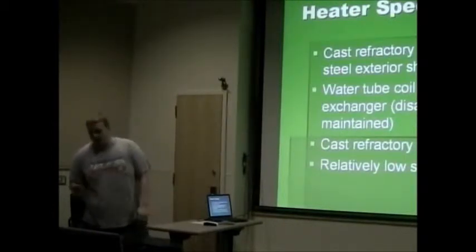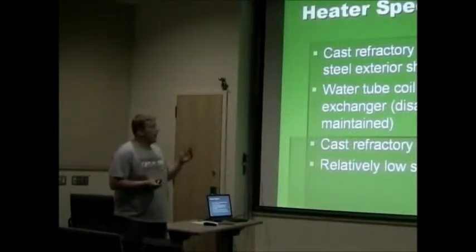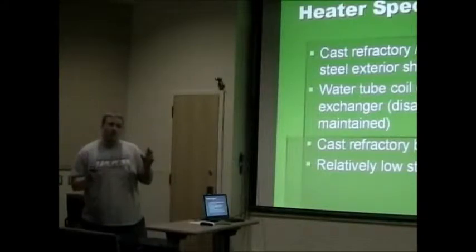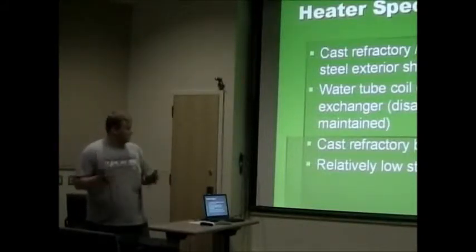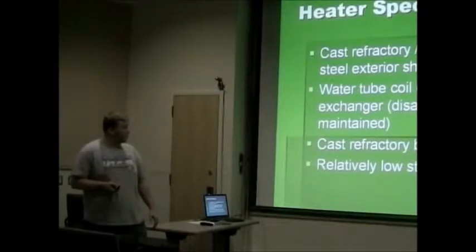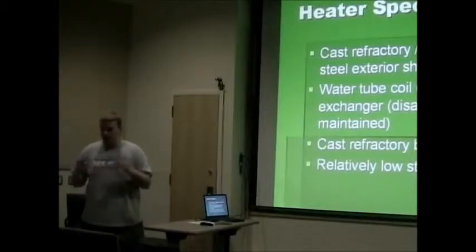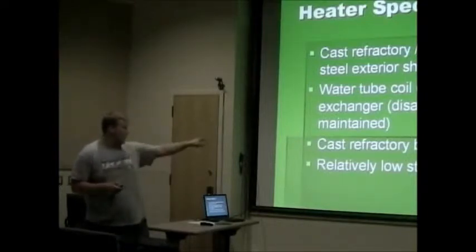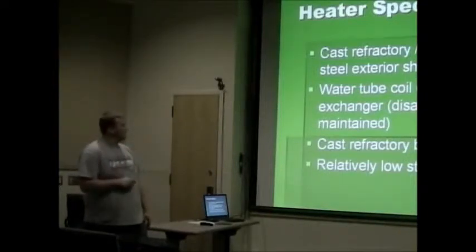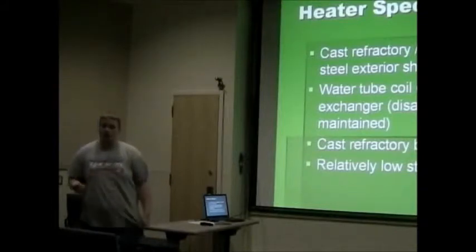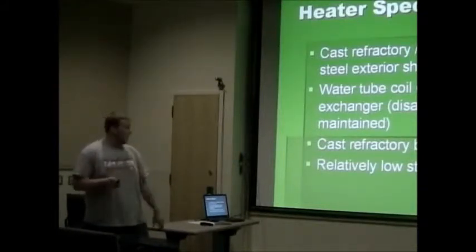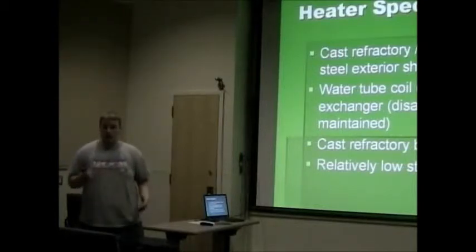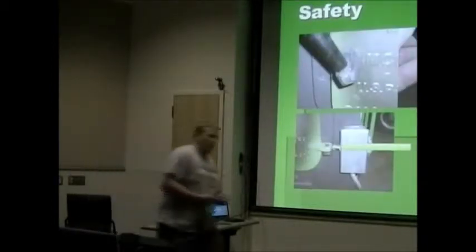Here are some heater specs that we have. We wanted to have some cast refractory walls and some insulated burped walls, not contacting the steel exterior shell. We wanted to have a water tube counterflow heat exchanger, like Tim mentioned earlier. It just means that the mass flows are going in the opposite direction. It gives you your greatest temperature difference. And disassembly needs to be maintained as we get to that in just a second. We used a cast refractory baffle airflow setup inside the stove to control the flow of the air. And with all that kind of tucked in there, we get a relatively low stove exterior temperature, so you won't get burned when you go to touch it.